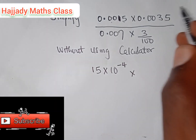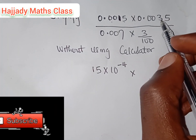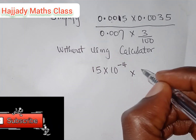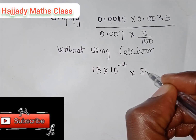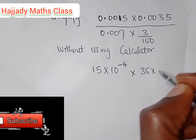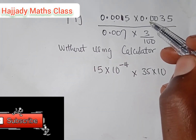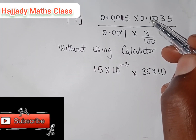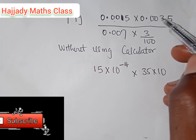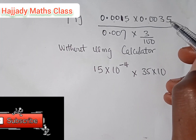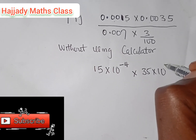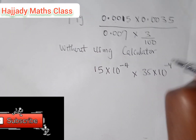Times what we have here: we have 35 times 10 raised to the power. How many digits do we have after the decimal point? 1, 2, 3, 4. Also minus 4.